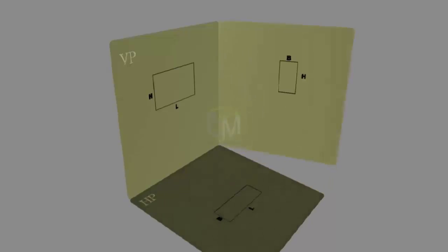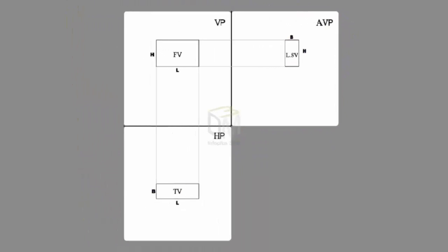Now rotate the auxiliary vertical plane through 90 degrees and keep it in line with vertical plane. The left side view comes to the right of front view.